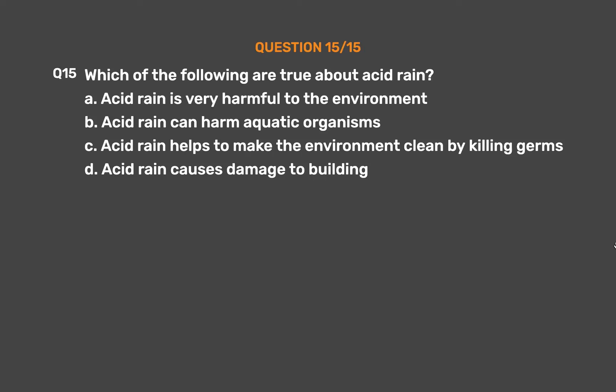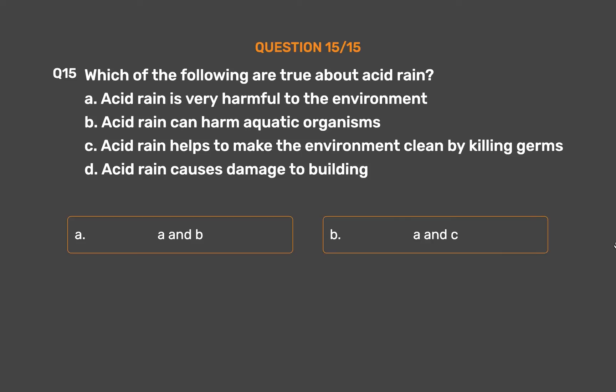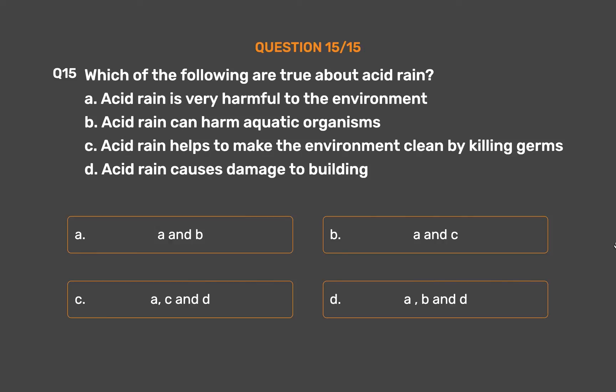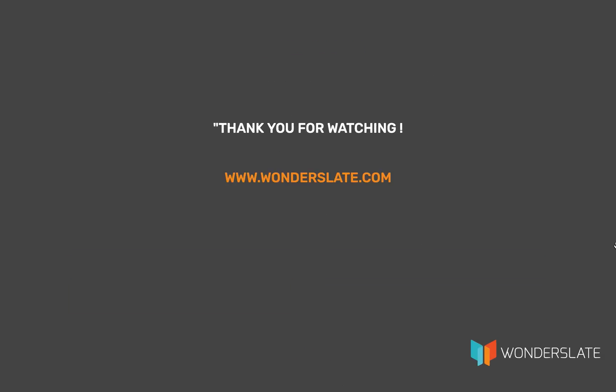Question number fifteen: Which of the following are true about acid rain? A: acid rain is very harmful to the environment, B: acid rain can harm aquatic organisms, C: acid rain helps to make the environment clean by killing germs, D: acid rain causes damage to buildings. Option A: A and B, option B: A and C, option C: A, C and D, option D: A, B and D. The correct answer is option D: A, B and D.